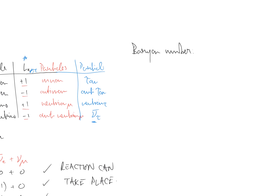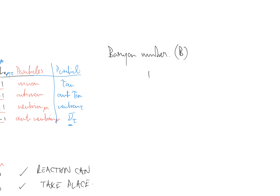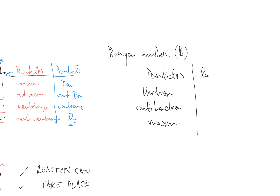Going back to conservation laws: as well as charge and lepton numbers, we also have baryon number B. For baryon number: a hadron has B equals one because there are three quarks each with a third charge; an anti-hadron has minus one; a meson has zero, because you have a quark and anti-quark pair that cancel each other out. Mesons have baryon numbers of zero — quite an important point.